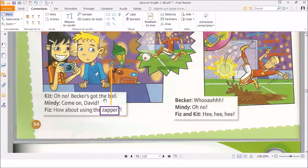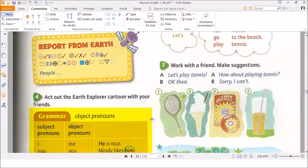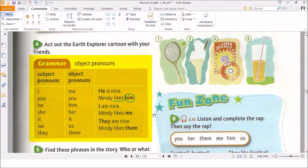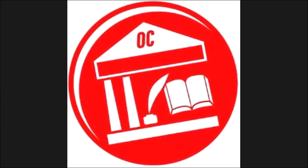Oh, no! Becker's got the ball. Come on, David. How about using the zapper? Whoa! Oh, no! Hehehe! At the end of the story, we have no more object pronouns. But we have three examples - it, him, her - and in all cases they follow the rule: they go after the verb. Ask her, like him, have it. That's the rule with the object pronouns - they go after the verb. And here we have the list if you don't remember. You're going to continue with the next part of the class on Zoom with your teacher. I hope you have fun, twin, and I'll see you next time. Bye-bye.